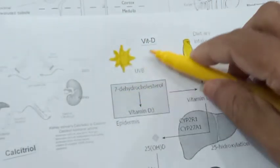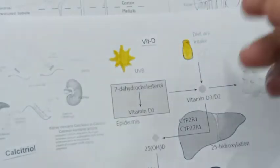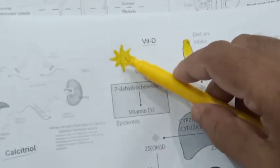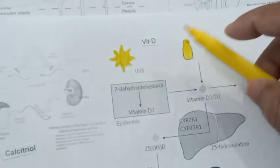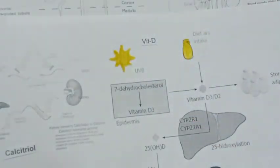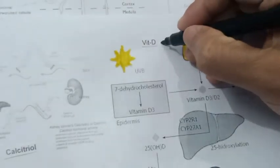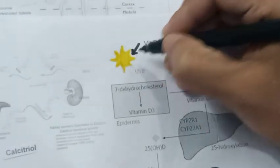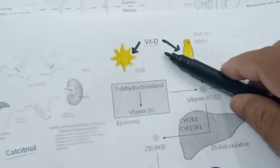Unfortunately, the vitamin D we get from sunlight via the skin and from dietary supplements are actually the inactive form of vitamin D. It is like a precursor.